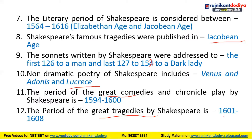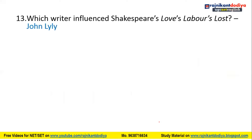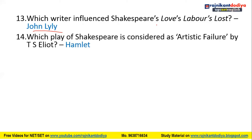The period of the great tragedies by Shakespeare is 1601 to 1608. The writer who influenced Shakespeare's Love's Labour's Lost was John Lyly. The play considered as an artistic failure by T.S. Eliot was Hamlet — T.S. Eliot considered Hamlet an artistic failure.